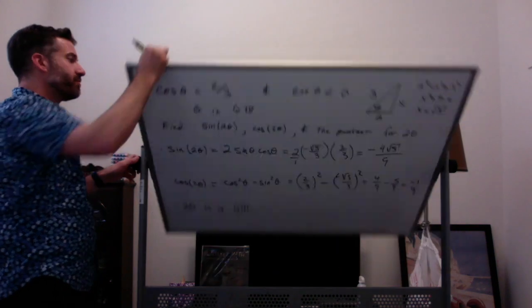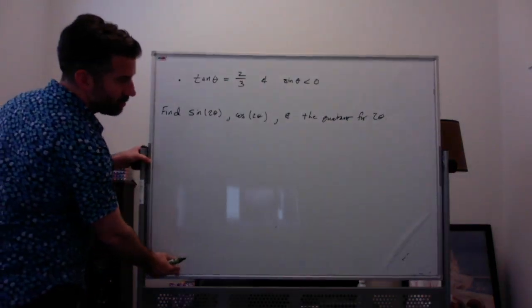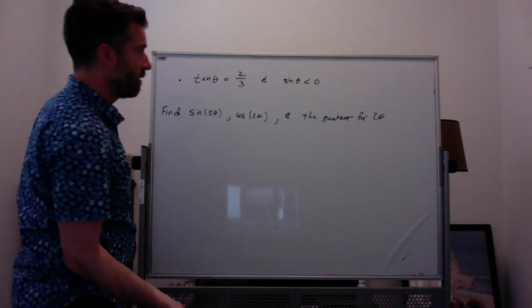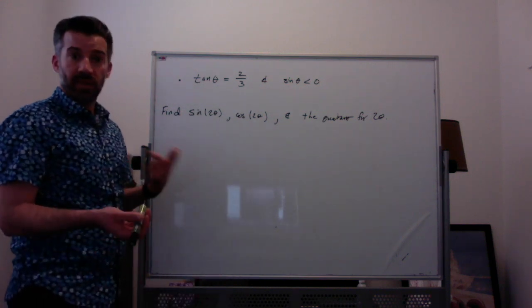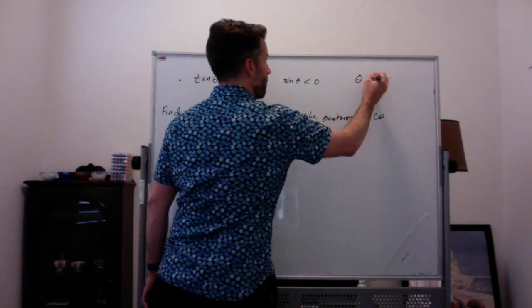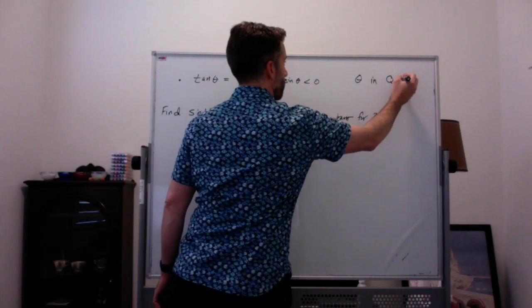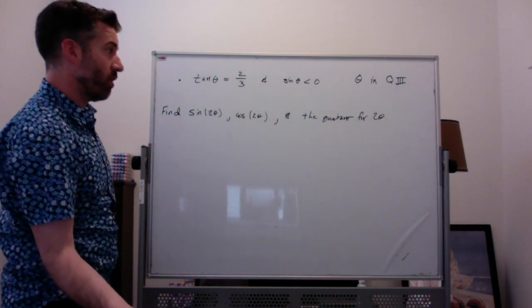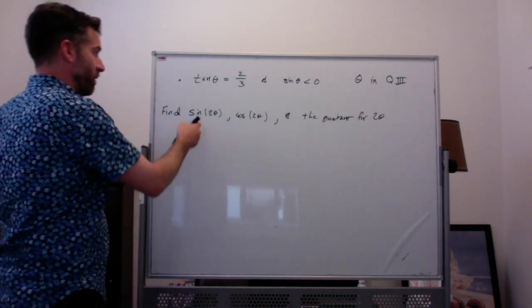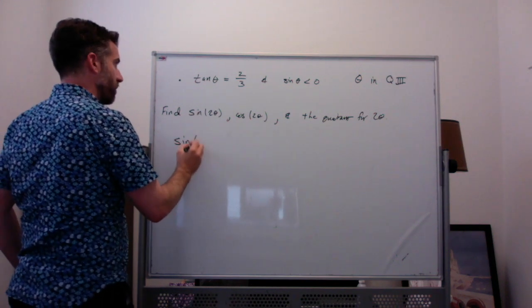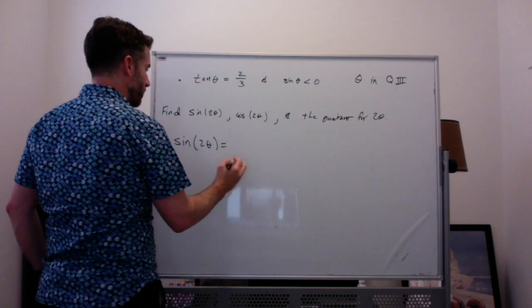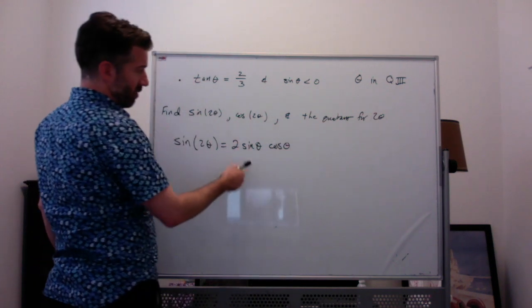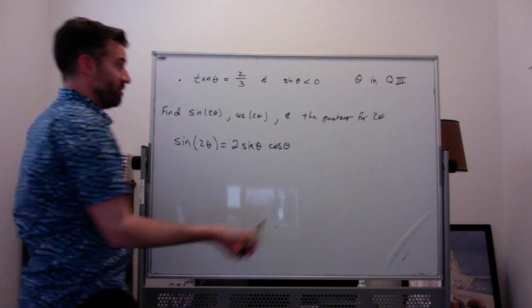Let's do a second example — same idea. Here, tangent of theta is equal to two-thirds and sine of theta is negative. If tangent is positive and sine is negative, we must be in quadrant 3. I'm going to draw the triangle so I can find cosine, because I'm trying to find sine of 2 theta, and sine of 2 theta equals 2 sine theta cosine theta. I don't know either sine or cosine yet, so let's draw the triangle.